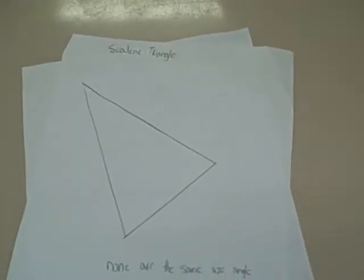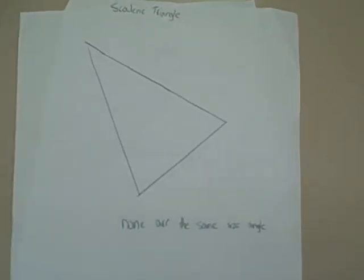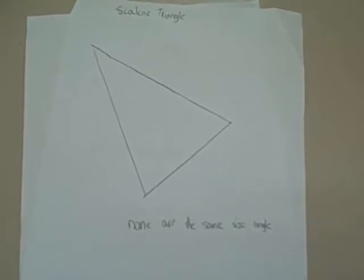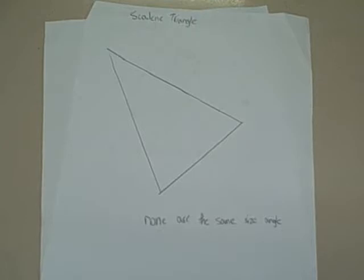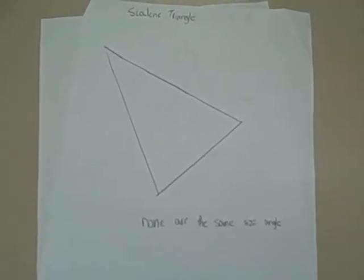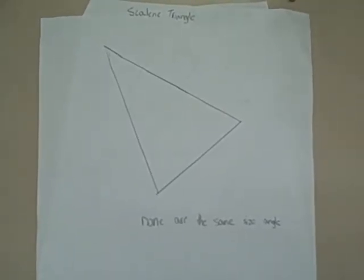On the next three triangles, one thing that makes them different is the size of their sides and angles. Scalene triangles, none of their sides or angles are the same.